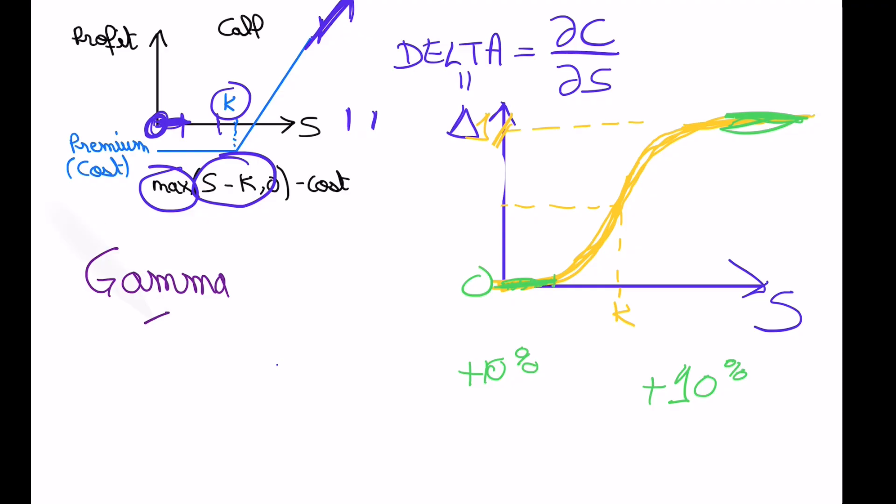And so your gamma is the second derivative of your call price with respect to the stock price, which means that your gamma is essentially the derivative of your delta with respect to the stock price.